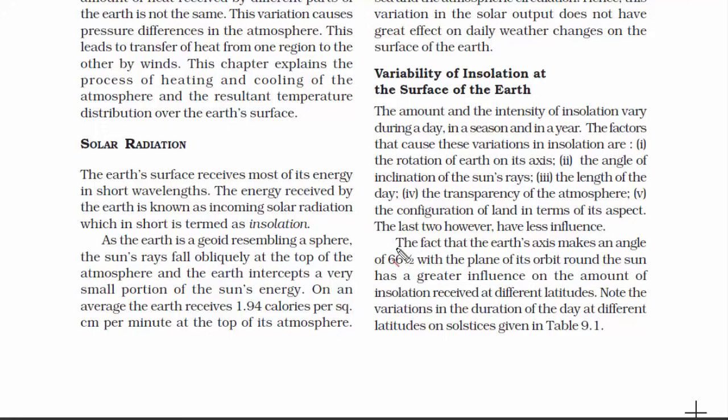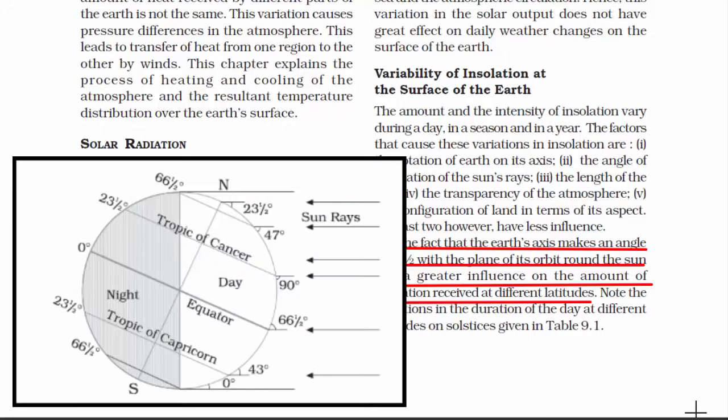Now, here it says the fact that the earth's axis makes an angle of 66.5 degrees with the plane of its orbit around the sun has a greater influence on the amount of insulation received at different latitudes. If you look at this picture, you can see the manner in which the earth is tilted. It's not like the equator is absolutely straight or linear with respect to the sun. It is always in this angle, 66.5 degrees. Remember this.